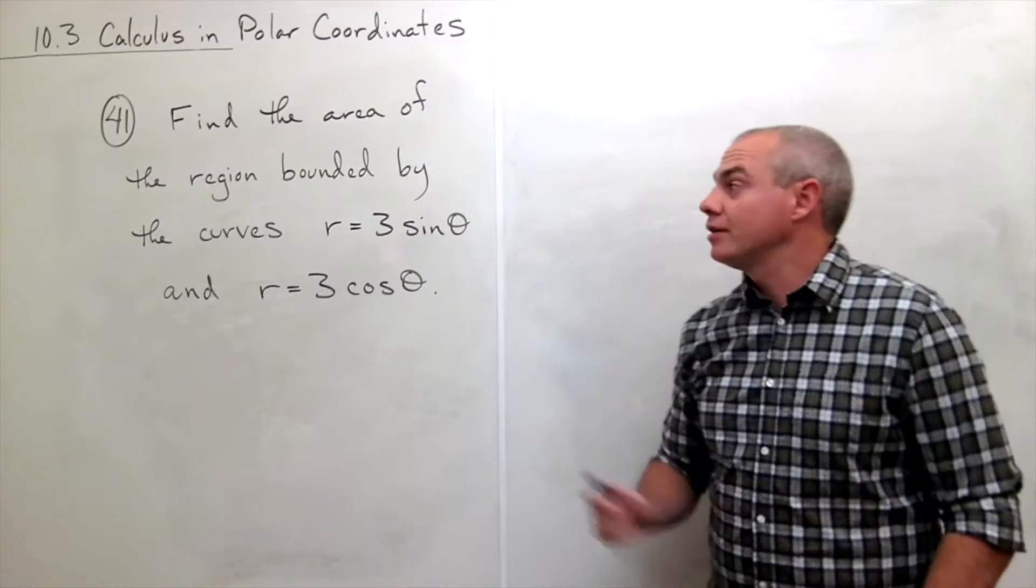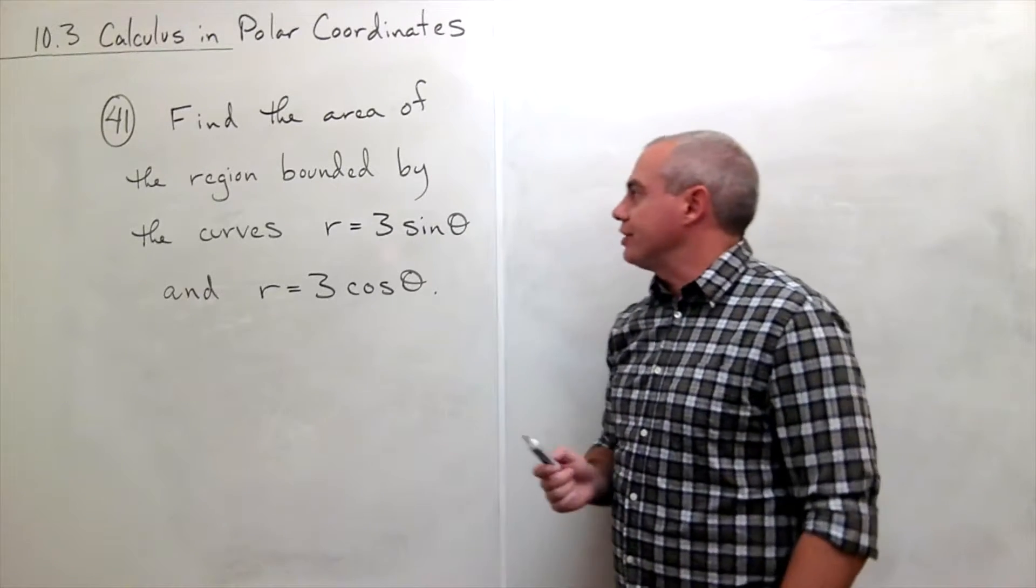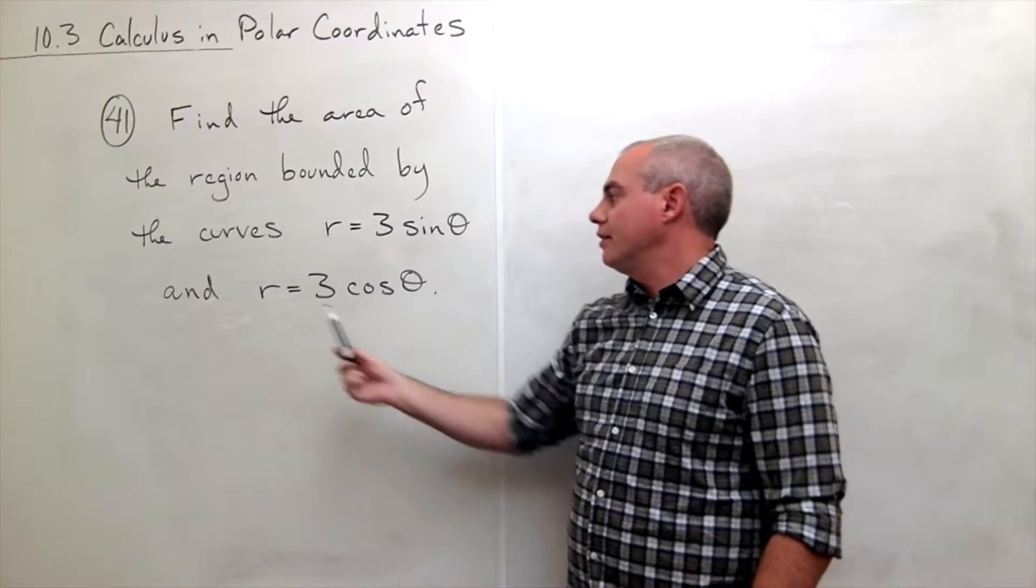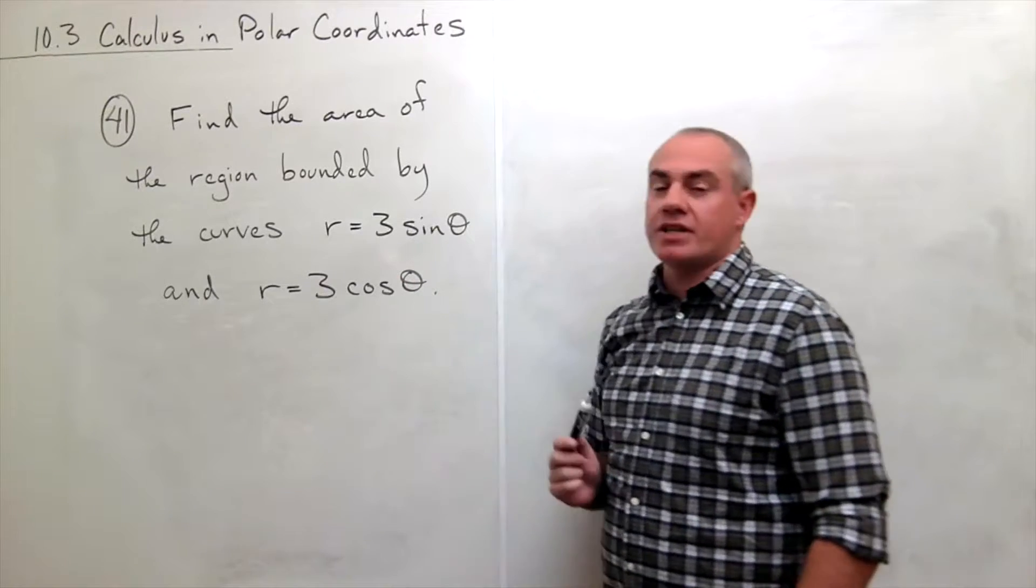In problem number 41, we'd like to find the area of the region bounded by the curves r equals 3 sine theta and r equals 3 cosine theta.